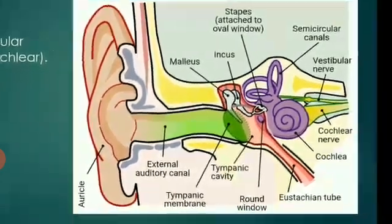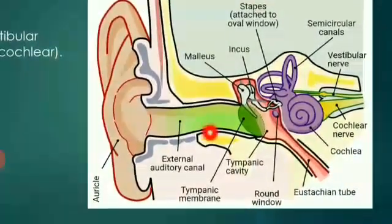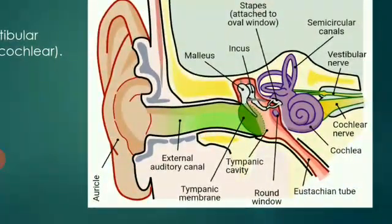There are some animals that can move their ear pinna; however, the human pinna cannot be moved, with the exception of atavism. Animals that can move their ear pinna are better at collecting sound waves than those with a static pinna.